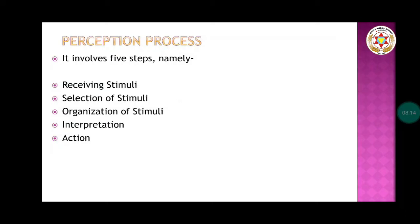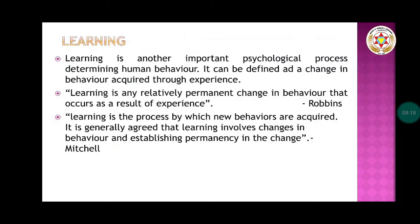The next topic is learning. Learning is another important psychological process determining human behavior. It can be defined as a change in human behavior acquired through experience. Learning is basically the things we acquire from our environment — whether social or professional. By Robbins, learning is any relatively permanent change in behavior that occurs as a result of experience. By Mitchell, learning is the process by which behaviors are acquired; it involves changes in behavior and establishing permanency in that change.